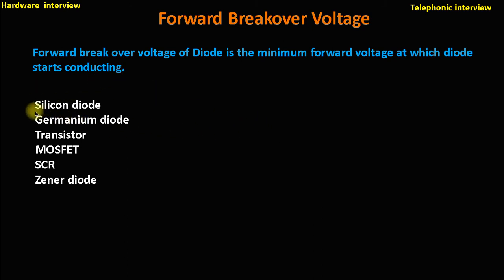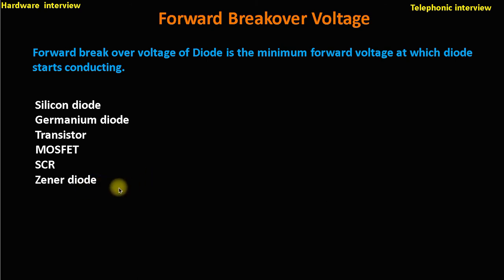This applies to various devices — it may be a diode, germanium, or silicon. It may be a transistor having an operating voltage, a MOSFET having a threshold voltage of the gate, an SCR, or a zener diode also having a threshold operating voltage or breakover voltage when used in the forward bias. So every active component has an operating voltage, also known as breakover voltage, operating voltage, on voltage, cutting voltage, or forward breakover voltage.